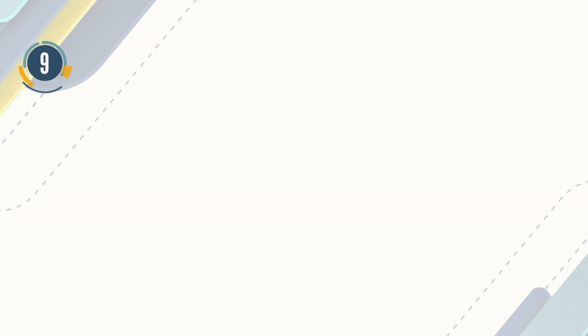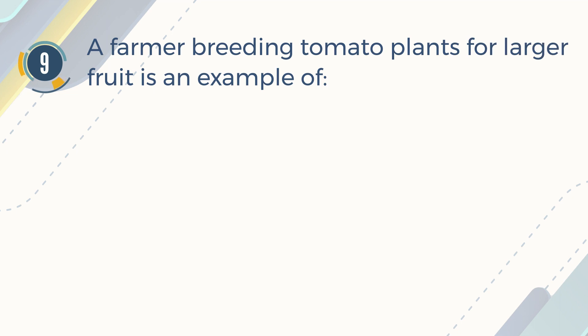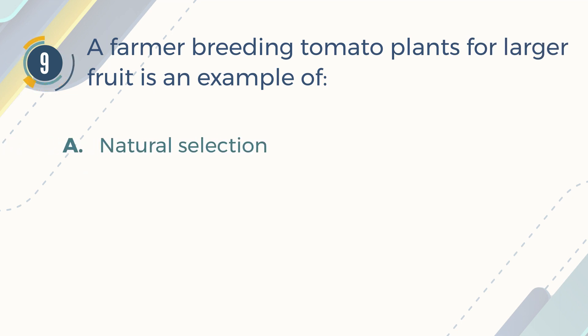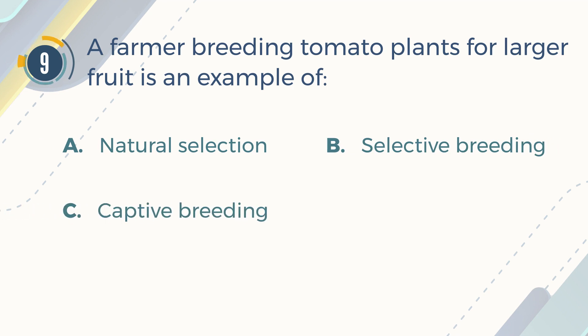Number 9. A farmer breeding tomato plants for larger fruit is an example of: A. Natural selection. B. Selective breeding. C. Captive breeding. D. Artificial breeding.